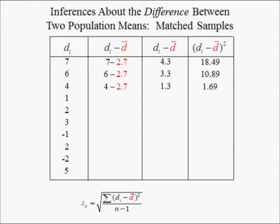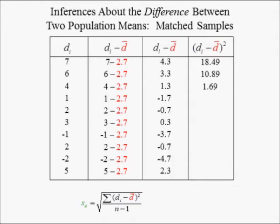The remaining deviations from the mean differences in delivery times are found by subtracting 2.7 from the remaining differences, which range from negative 4.7 to 2.3 hours. The remaining squared deviations are found by squaring the remaining deviations from mean differences in delivery times. The sum of squared deviations from the mean differences in delivery times is equal to 76.1 hours squared.